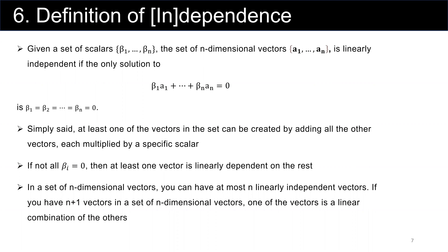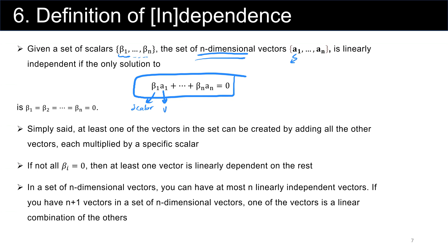Let's start with the definition. Assume we have a set of scalars beta_1, beta_2, ..., beta_n, and a set of n-dimensional vectors a_1, a_2, ..., a_n. These vectors are linearly independent if the only solution to beta_1 * a_1 + ... + beta_n * a_n = 0 is that all scalar values beta_i are equal to zero. In this case, we call them linearly independent.